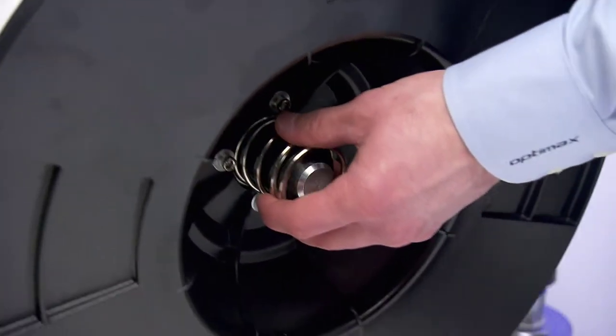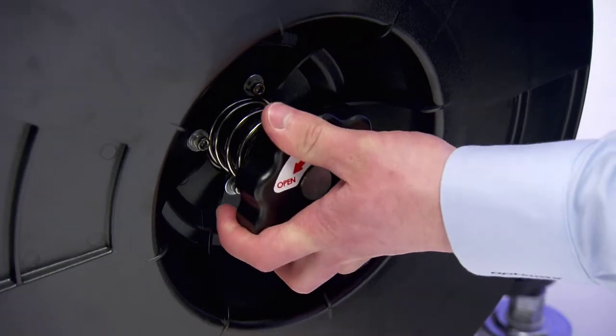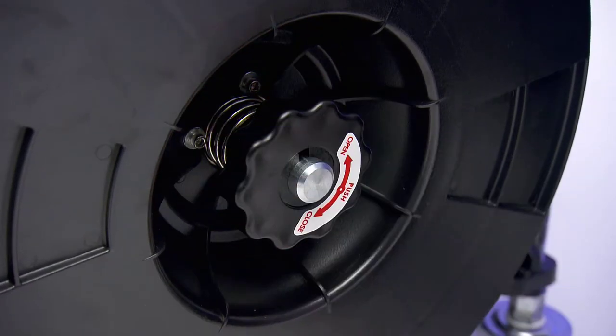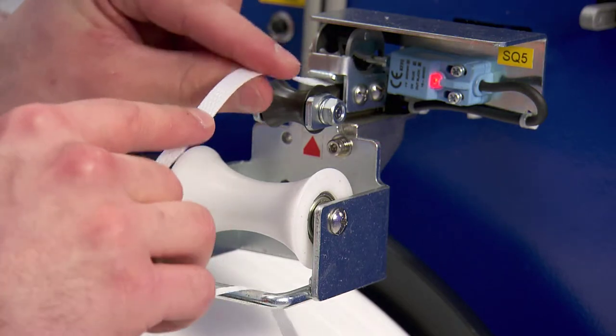On the TRS-700 the strapping coil is externally mounted, secured with a quarter turn nut for rapid reloading. Automatic strap feeding reduces coil change downtime.